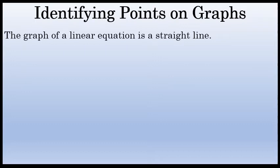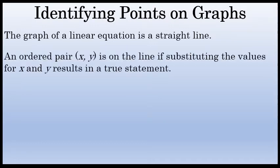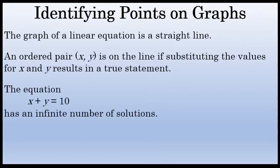A linear equation's graph is a straight line. A linear equation is an equation in two variables where there's not a power other than one on the variables. That graph is a straight line, and an ordered pair — an x and a y — is on that line if substituting the values for x and y into the equation results in a true statement.